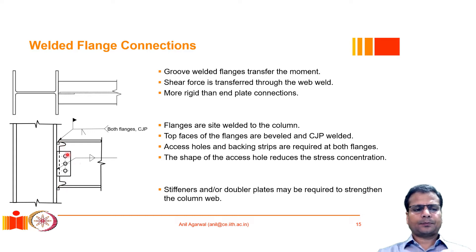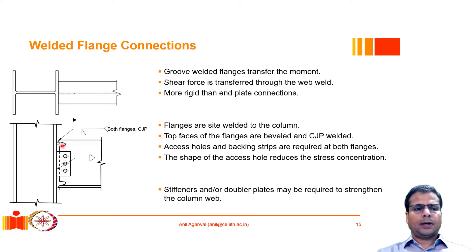At the site, the beam is aligned with the holes and the bolts are placed. These bolts not only resist shear but also act as support during the erection process. Once the bolts are in place, the beam is stable and welders can then provide a site weld between the beam flange and the column flange.